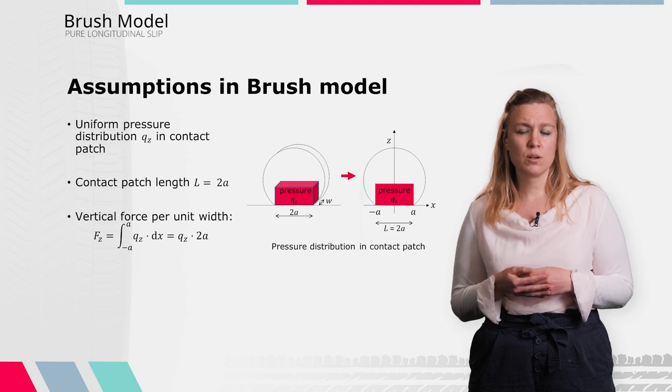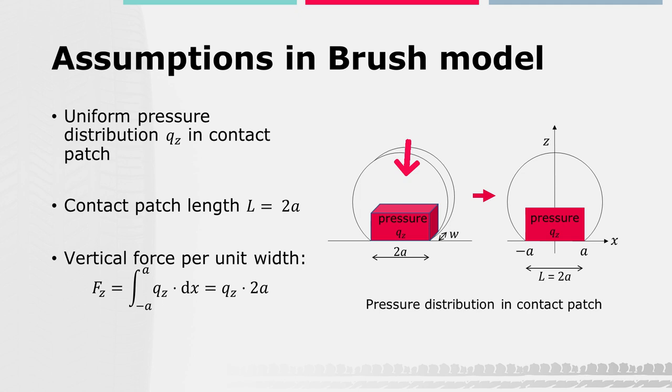As we have seen in a previous lecture, when a tire is pressed against the road, this results in a certain pressure distribution in the contact patch. To further simplify, we assume the pressure distribution to be uniform, both in longitudinal direction of the contact patch, with L being 2 times A, and in lateral direction along the width W. Note that for the longitudinal direction of the contact patch, a uniform pressure distribution is a strong simplification.